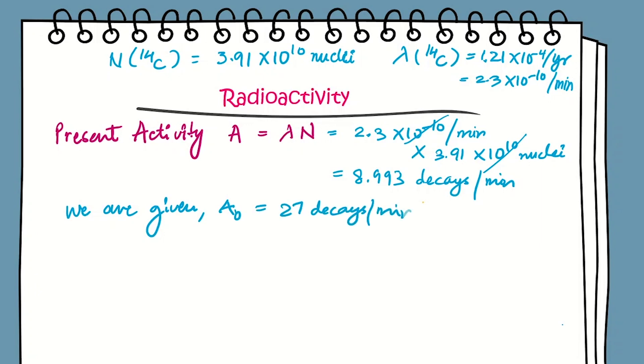We are given the initial activity to be 27 decays per minute. We can see there's a decay in the activity. So we will use the exponential decay for activity: A = A₀e^(-λt). We can write this as t = (1/λ) × ln(A₀/A).